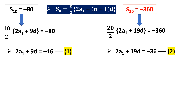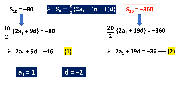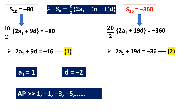Solving these two simultaneous equations by elimination, you will get a1 = 1 and d = −2. The AP is therefore 1, −1, −3, −5, and so on. I have left the final solving steps for you — subtract Equation 1 from Equation 2, find d, then substitute back to find a1, and you can write the AP.